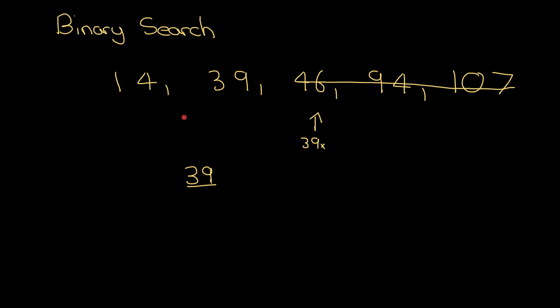Then I repeat the same process with the numbers which are remaining. I've got 14 and 39 here. If I've got an even number, what I tend to do is find the midpoint and round up. So the midpoint would actually be one and a half, but I round up to 39. I ask myself, does that equal 39? Yes it does, so I found the element.